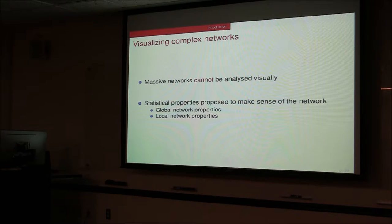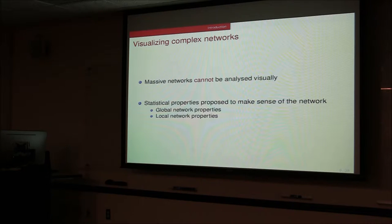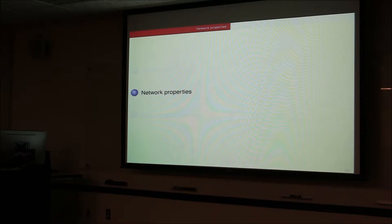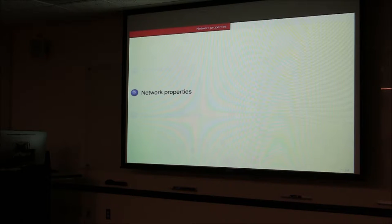Broadly speaking, there are two kinds of network properties. Global network properties look at the network as a whole, and local network properties look at the local neighborhood of nodes in the network. I'll describe the important network properties commonly used in this field. We talked about networks in general, why we study network structure to understand system behavior, and that led us to introduce statistical properties for analyzing networks in further detail.